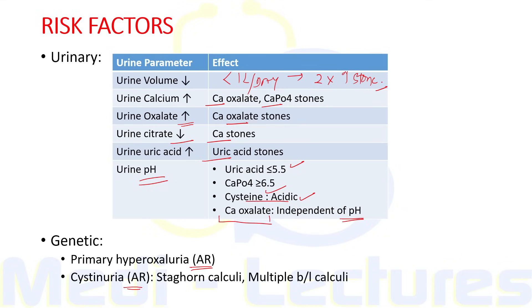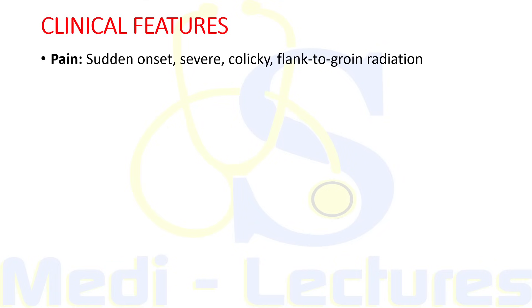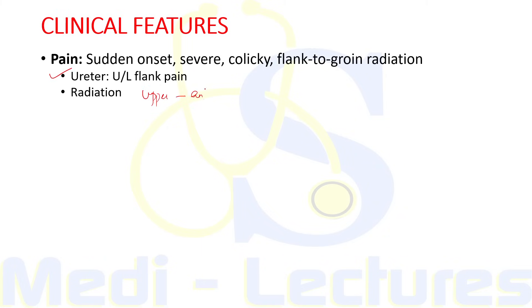Now let's move on to patient presentation. The two common presentations are pain and hematuria. Pain is sudden onset, severe, colicky, with flank-to-groin radiation. A stone lodged in the ureter leads to unilateral flank pain. If the stone is in the upper ureter there will be anterior radiation; if the stone is in the lower ureter it will radiate to the ipsilateral labium in females and scrotum in males.